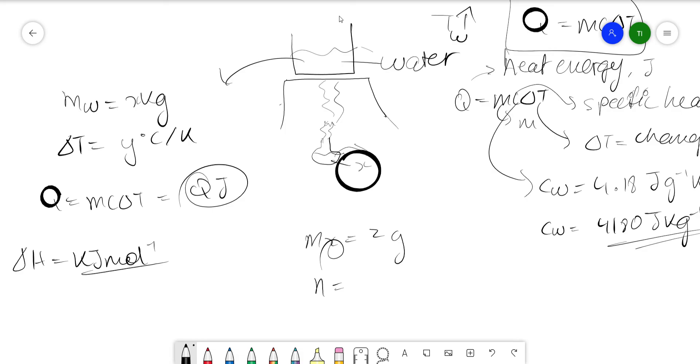So that'll be Q kilojoules. Then whatever moles of X you get, you divide the Q kilojoules by the moles, so you will get Q kilojoules per mole.